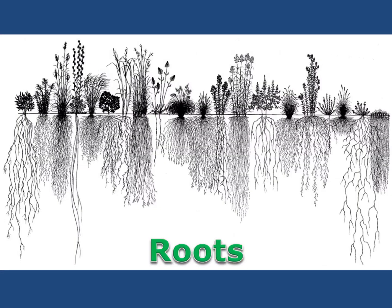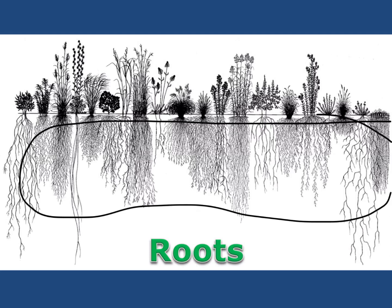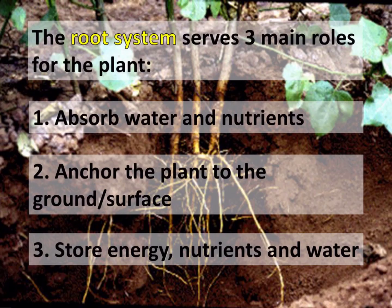Plants also have several important organs including roots. The roots of a plant are part of the root system and have three major roles. First is to absorb water and nutrients from their surroundings. The second is to anchor the plant to the ground or surface that it's growing on. And third, the roots help to store energy, nutrients, and water for later use by the plant.